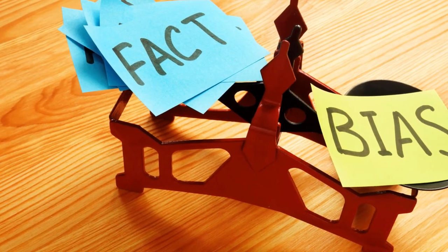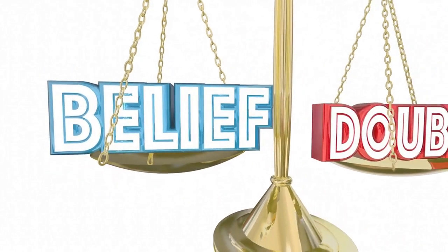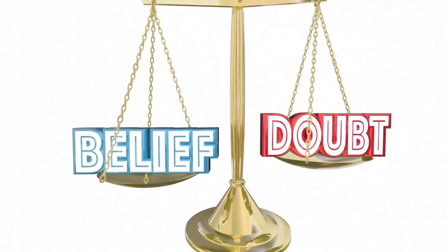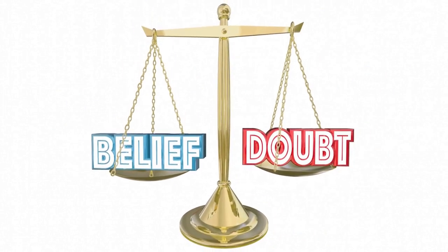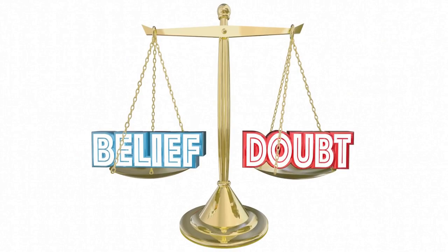So how do these two stack up? Well, it's a clash of subjectivity versus objectivity, belief versus evidence. Confirmation bias can be a formidable opponent because it's deeply ingrained in our psychology. It's often unconscious and can be difficult to overcome. However, scientific prediction has the advantage of being based on facts and empirical evidence. It's grounded in the scientific method, which is designed to minimize bias and maximize accuracy.